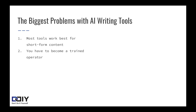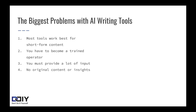Number two is that you have to become a trained operator in order to use the tools. Most of them are just not intuitive and can't be used without written procedures or documentation. There are some exceptions, but overall, that's what this course is for. Number three, you must provide a lot of input and continuously iterate to feed AI tools enough context in order to get half decent long form output. Again, there are some exceptions to this rule, which we will show you.